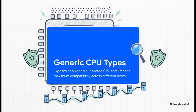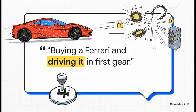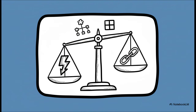Now, let's jump to the other end of the spectrum: the generic types, like x86-64-v2. Their goal is the exact opposite of host — maximum compatibility and safety. They basically hide all the newest, fanciest features and only show a common set of instructions that pretty much any modern processor is going to understand. The trade-off, of course, is performance. Using a generic CPU type on a powerful new server is like buying a Ferrari and then driving it everywhere locked in first gear — safe, but you're leaving a massive amount of performance on the table. Then there are the legacy models, which mimic specific real-world CPU generations like Westmere or Skylake. This gives you a predictable balance: more features than the generic types, but a lot safer for migration than using host. It's a popular choice for tricky workloads like Windows Server where you need stability but can't afford to be stuck in first gear.